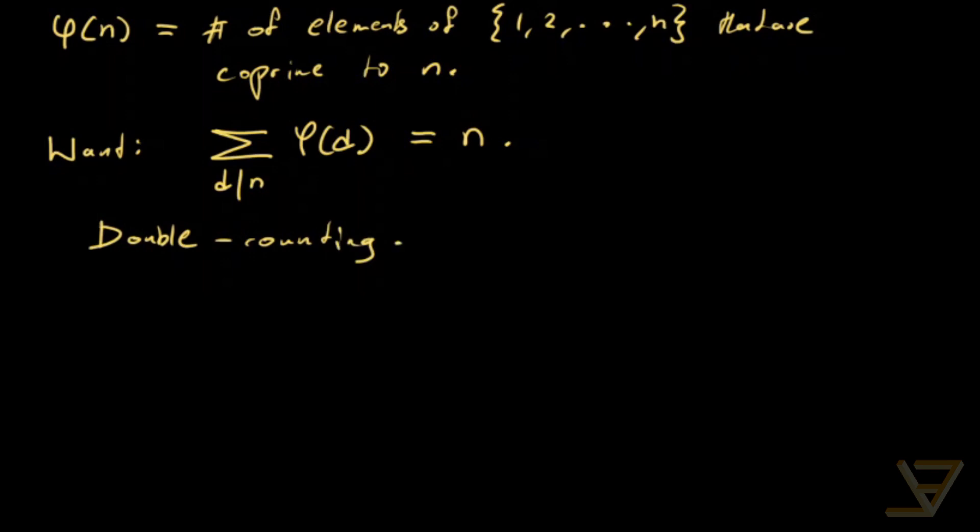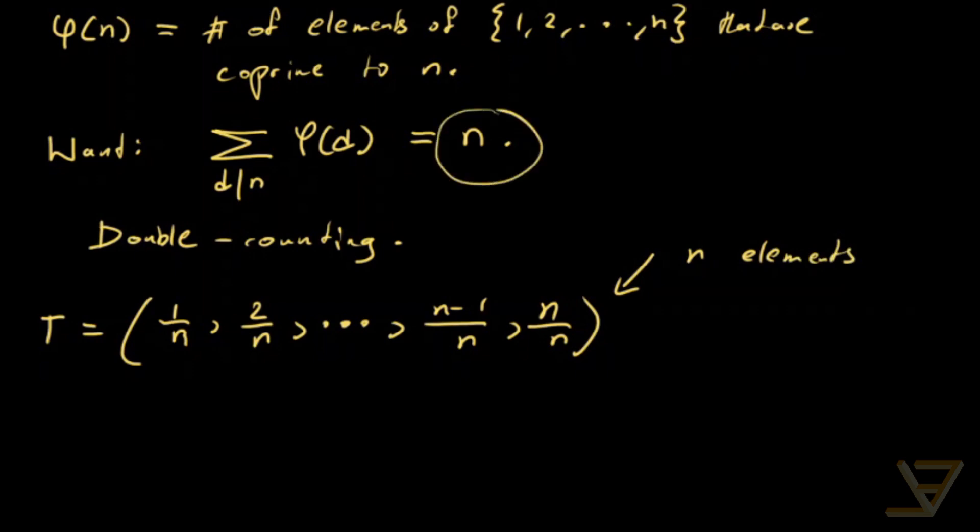What double counting does is that it takes a certain set and it finds its cardinality in two different ways. The set that we're going to be looking at is actually a tuple. The tuple is T equals 1 over n, 2 over n, all the way through to n minus 1 over n, n over n. And clearly this has n elements. So that counts for the right side.